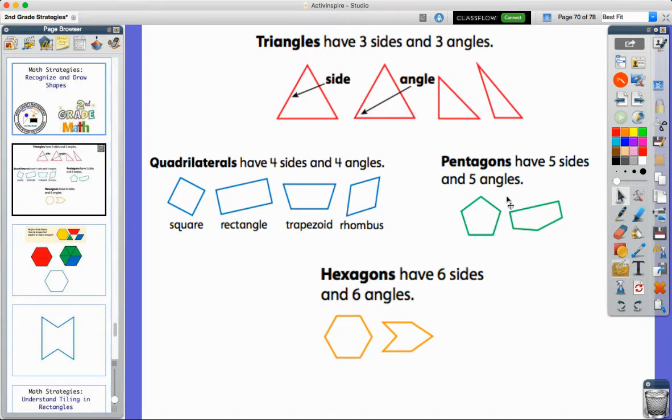Then we have a group called pentagons, which all have five sides and five angles. You'll see here two shapes - very similar shapes, but the sides are a little bit longer on this one. But you'll see they both have five sides and five angles.